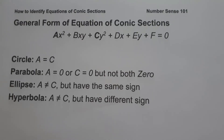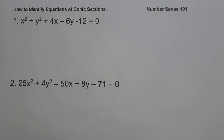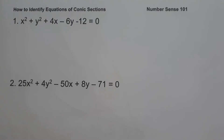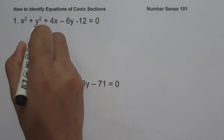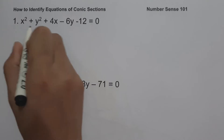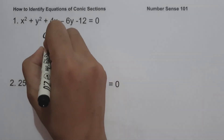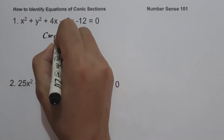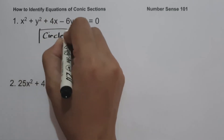So let's start and let's have an example. On the given set of examples, we are going to identify the conic sections using the given equations. On number one: x² + y² + 4x − 6y − 12 = 0. Since the coefficient of x² and y² are the same, we can say that this equation is a circle.